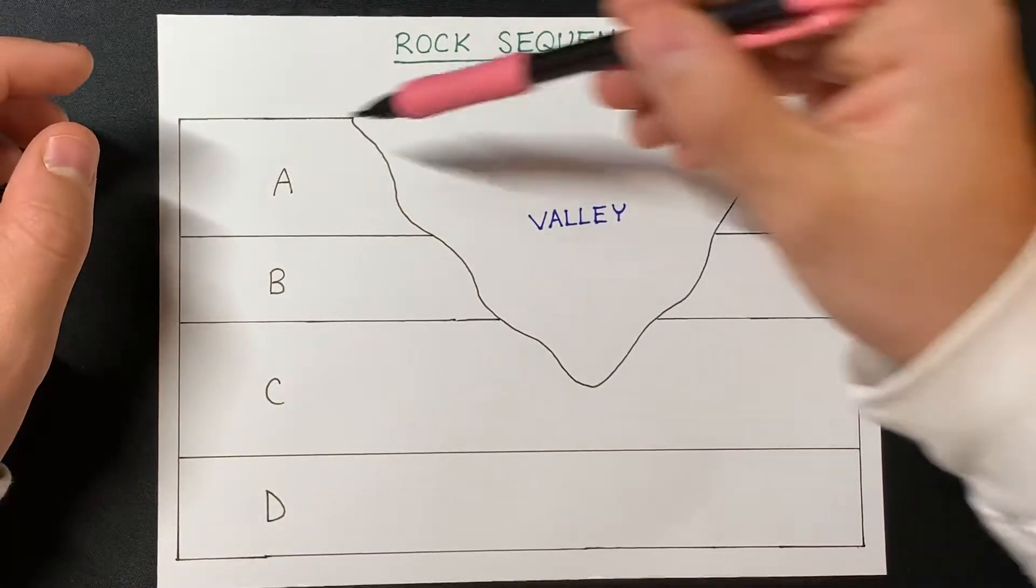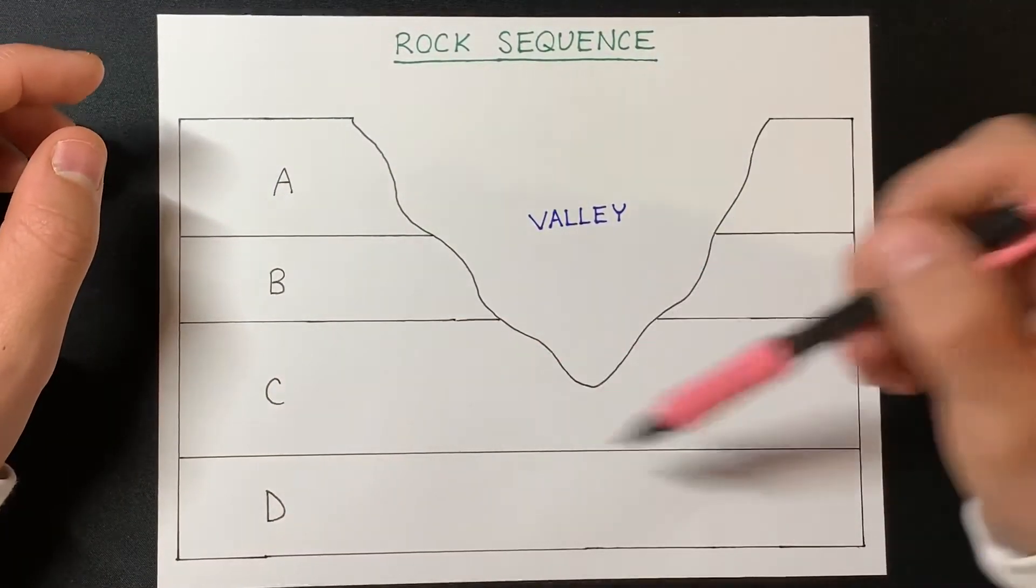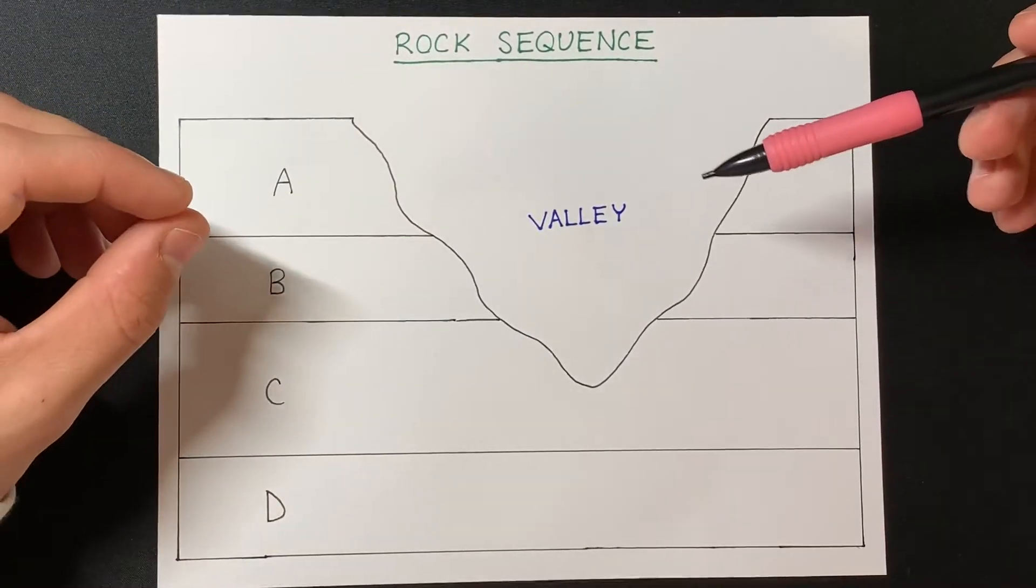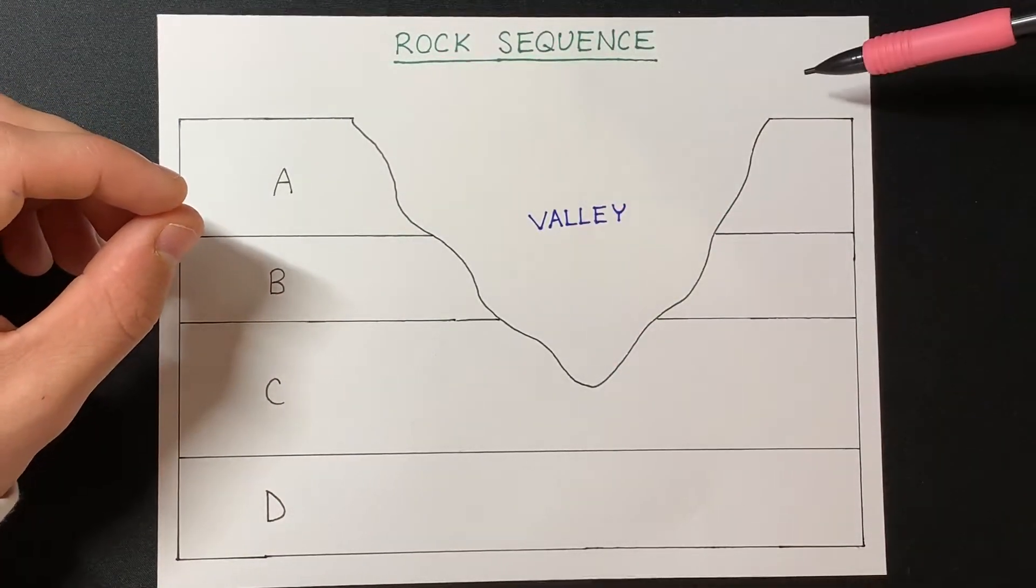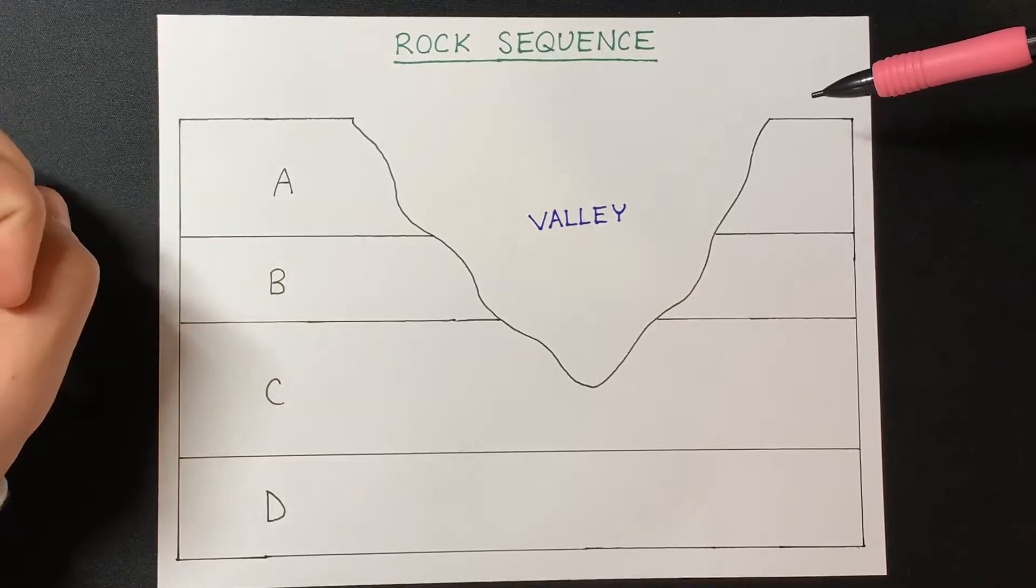This rock sequence was originally connected, but some erosional process occurred that formed the valley and eroded away these rock layers.